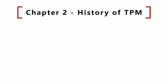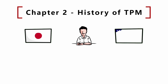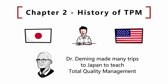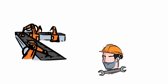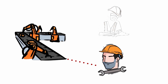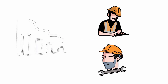Chapter 2: The History of TPM. TPM is a methodology born in Japan. After the Second World War, the Japanese industry was devastated and industrial leaders began to adopt American philosophies of quality management and quality control. Dr. Deming made many trips to Japan to teach total quality management. In those years, the Japanese industry began to build and use automatic equipment, which created the belief that only specialized technicians could intervene on the machines.